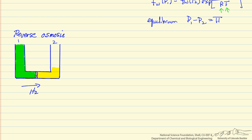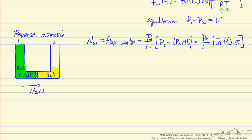Now let's look at reverse osmosis, where water permeates through the membrane. The water flux — in moles per area per time — is proportional to a permeability, which is a property of the membrane, divided by the membrane thickness (a thicker membrane gives lower flux), times the pressure on the feed side minus the quantity (pressure on the permeate side plus the osmotic pressure). If this pressure difference equals the osmotic pressure there is no flux, so we need a pressure difference greater than the osmotic pressure to achieve reverse osmosis.